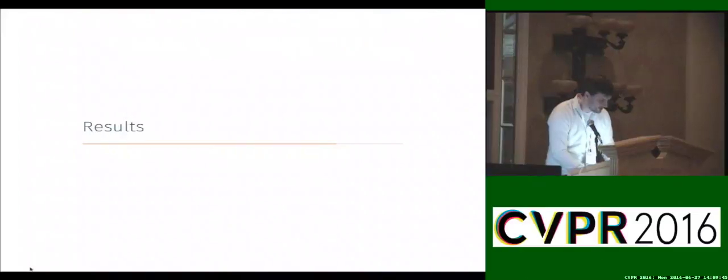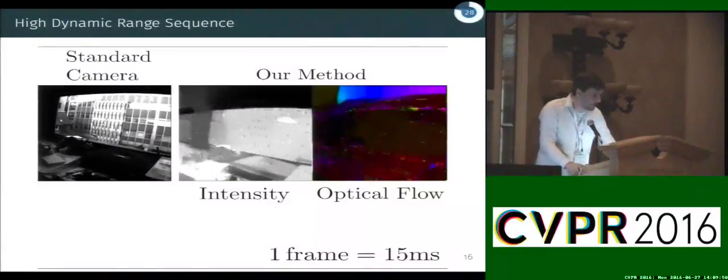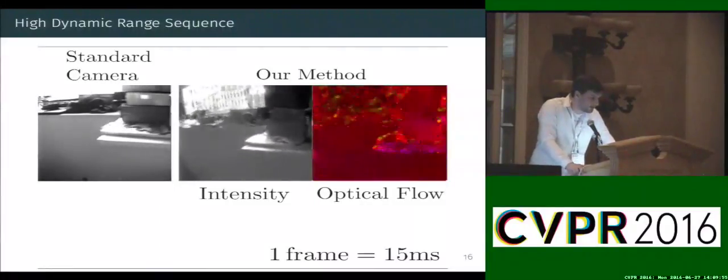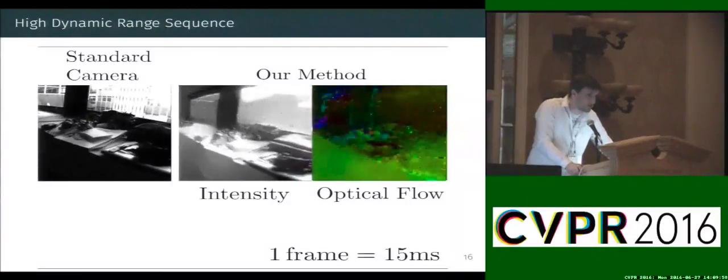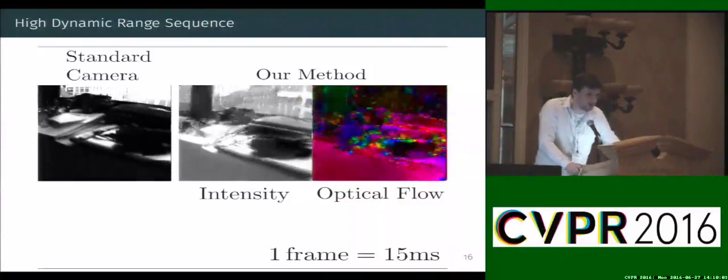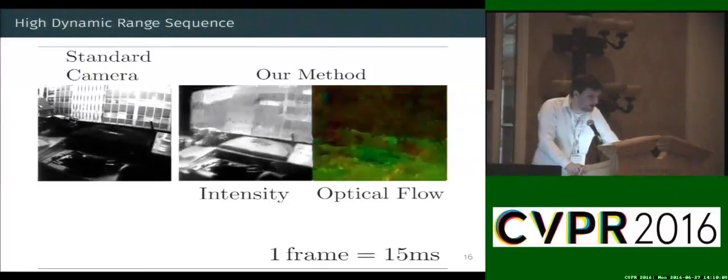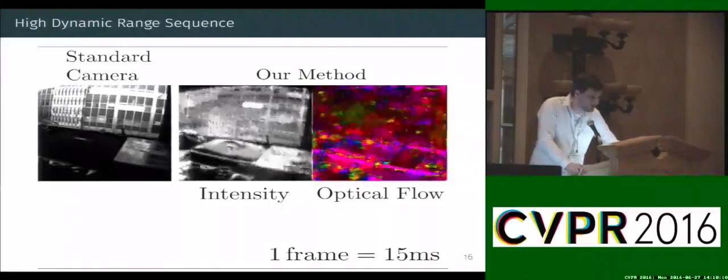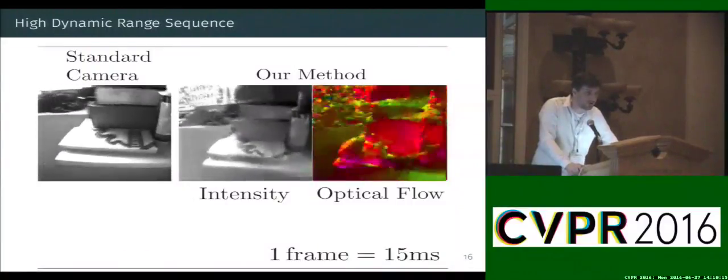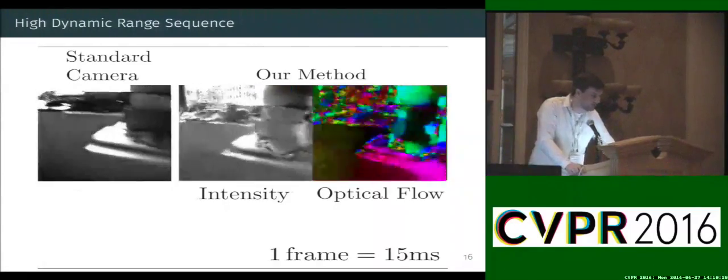So the next example we compare our reconstruction results with a standard camera to highlight the high dynamic range capabilities of our method. So as you can see the standard camera has quite trouble to adjust its auto gain as we point both cameras into the interior and exterior of the room. But with reconstruction results we can still see details from the inside and the outside. Here I want to point out the low resolution of the event camera which is 128 squared since this is still a very prototype model so a lot of the details are unfortunately lost.